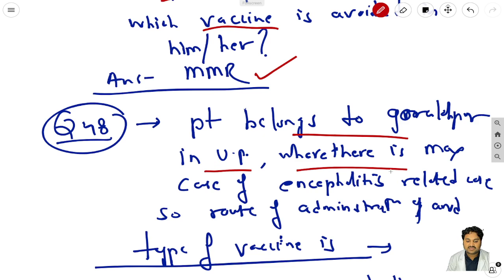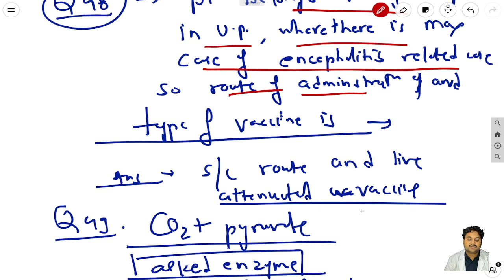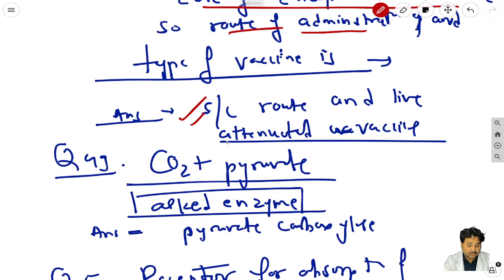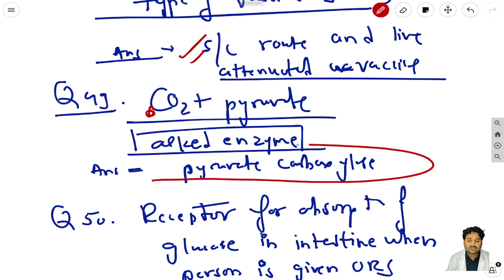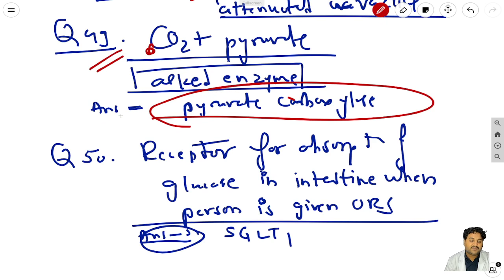Question 48: a patient belongs to Gorakhpur in UP, where there is a maximum case of encephalitis - the route of administration must be subcutaneous and a live attenuated vaccine must be given. Question 49: CO2 plus pyruvate - the enzyme involved is pyruvate carboxylase.